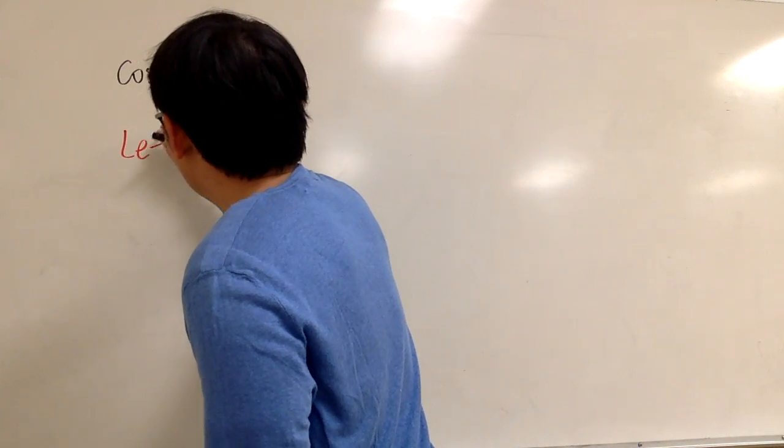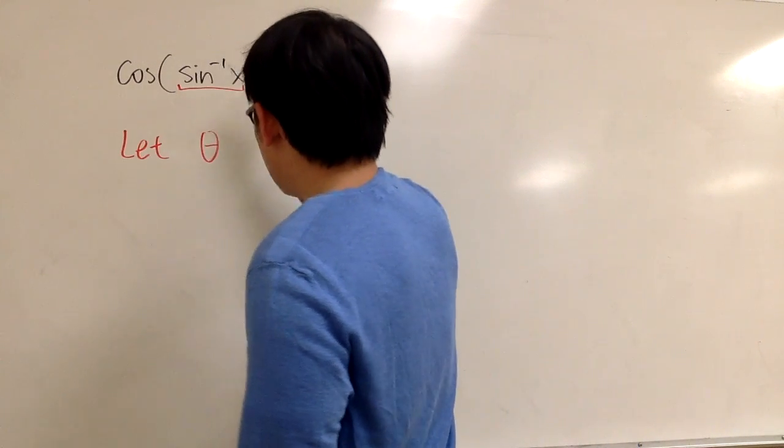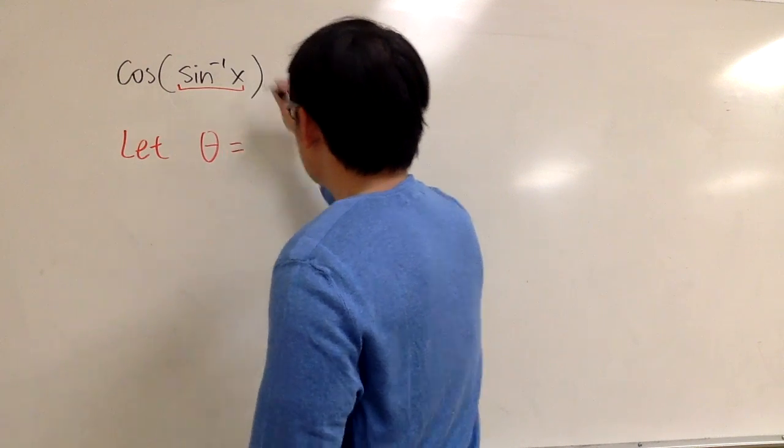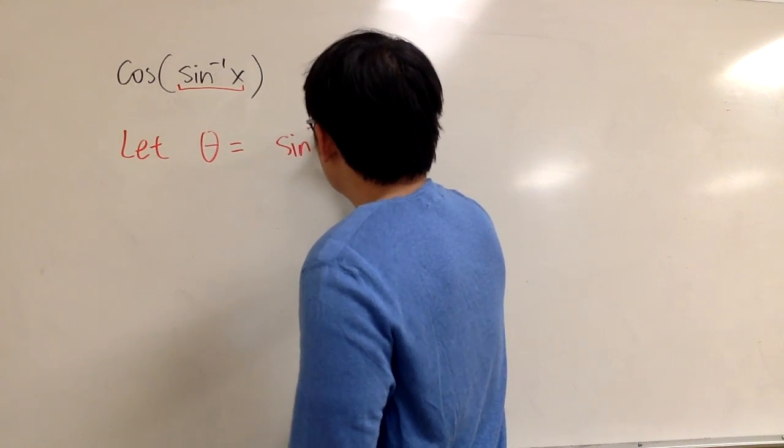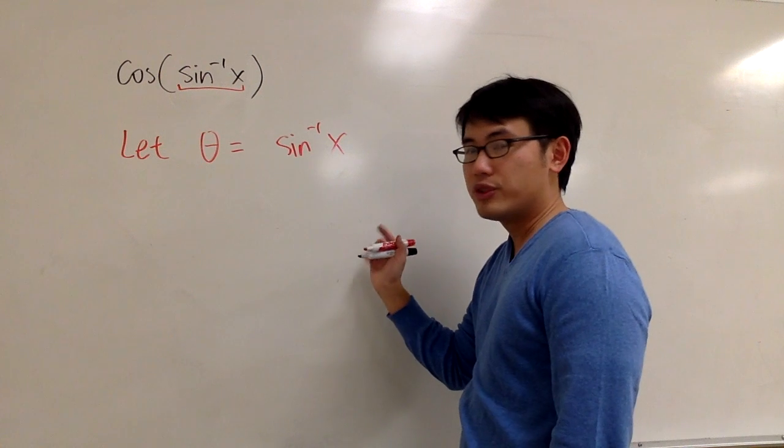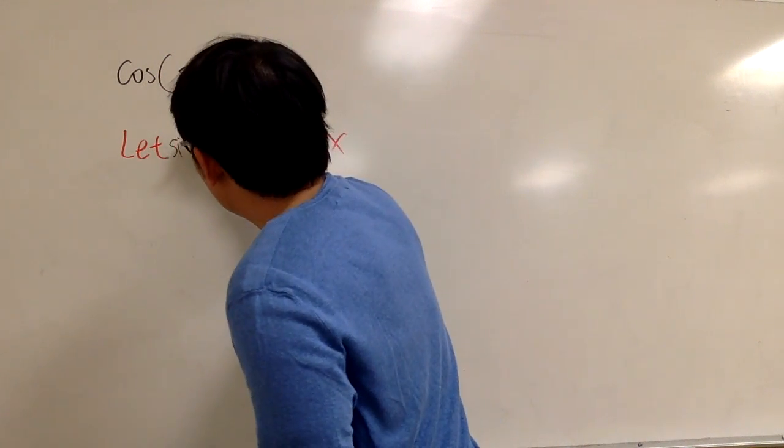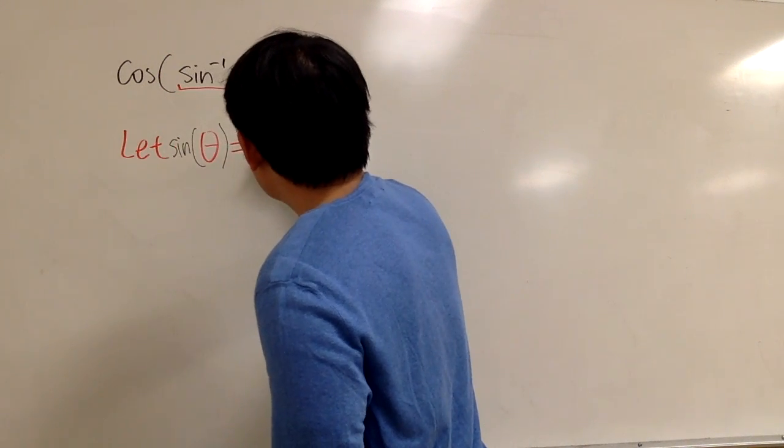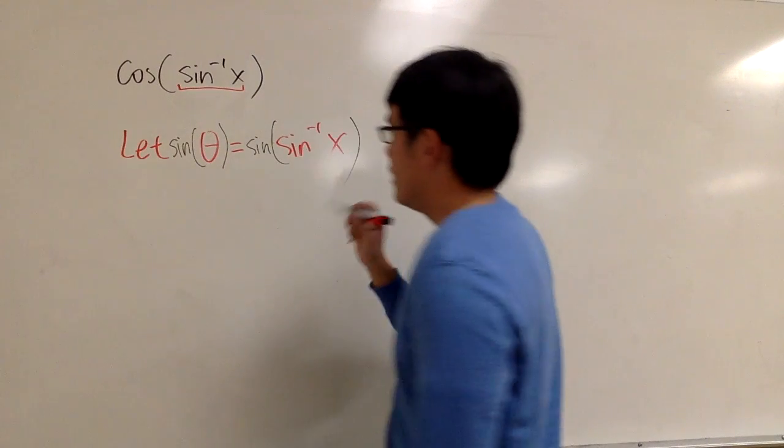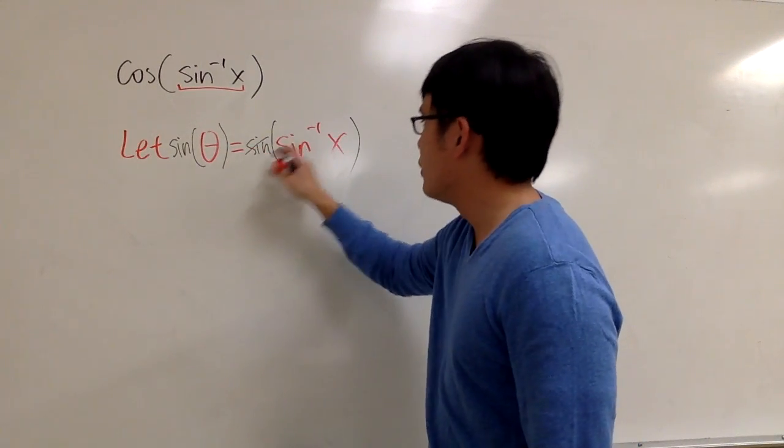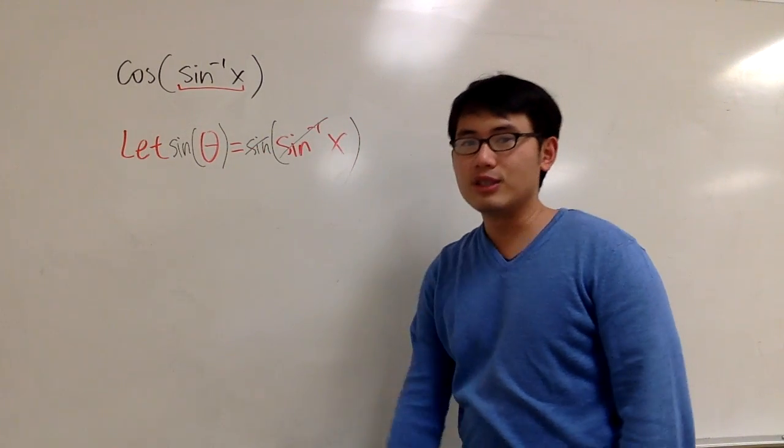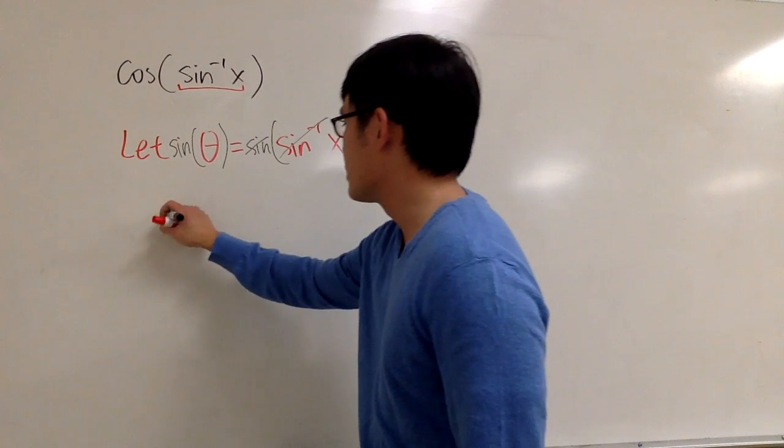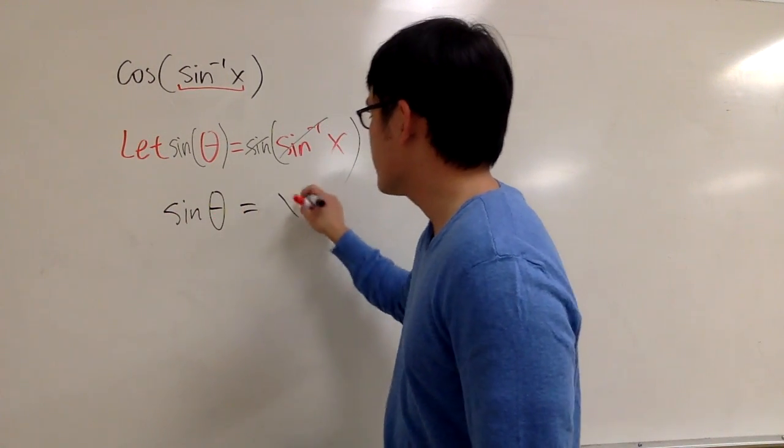So I can begin by saying that theta equals that angle, which is theta equals inverse sine x. And once I have this equation, I can apply the regular sine on both sides. And this way, the original and inverse cancel each other, and we are talking about sine of an angle equals x.